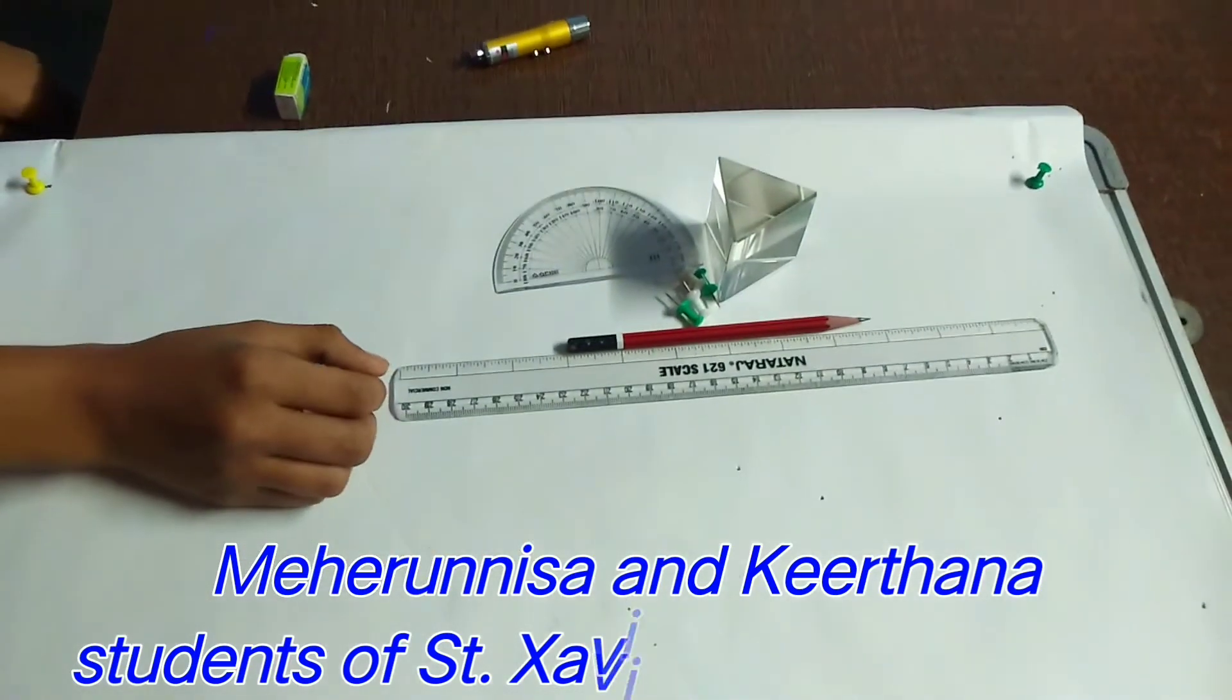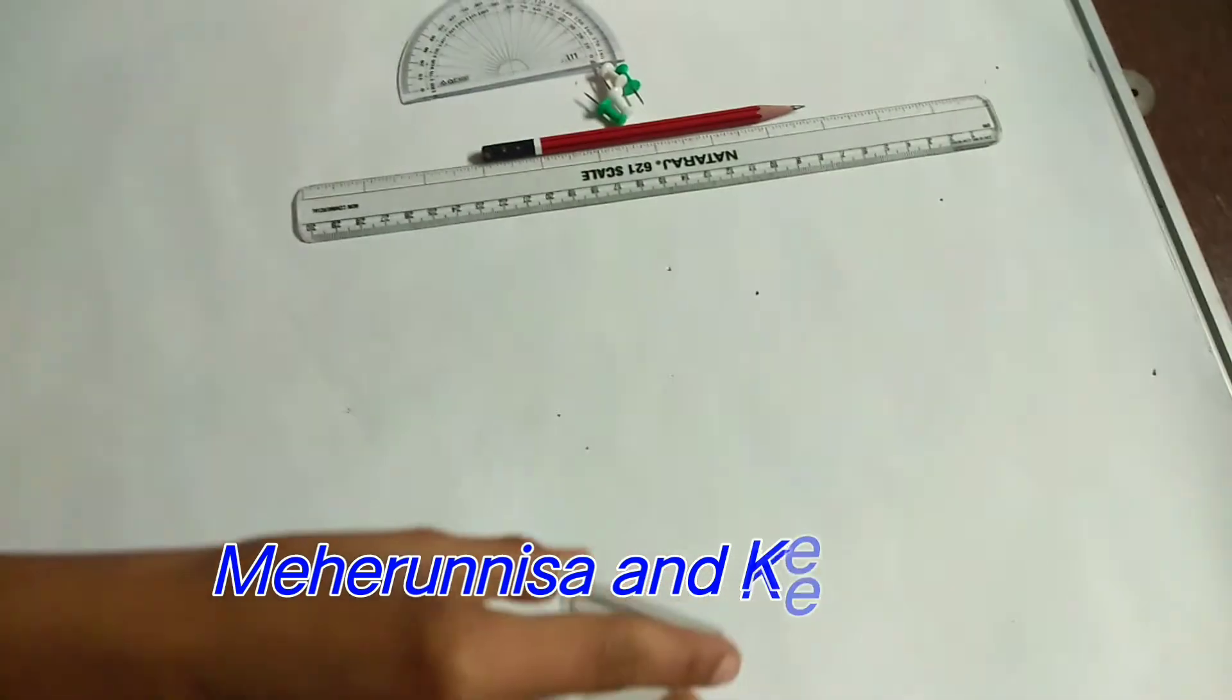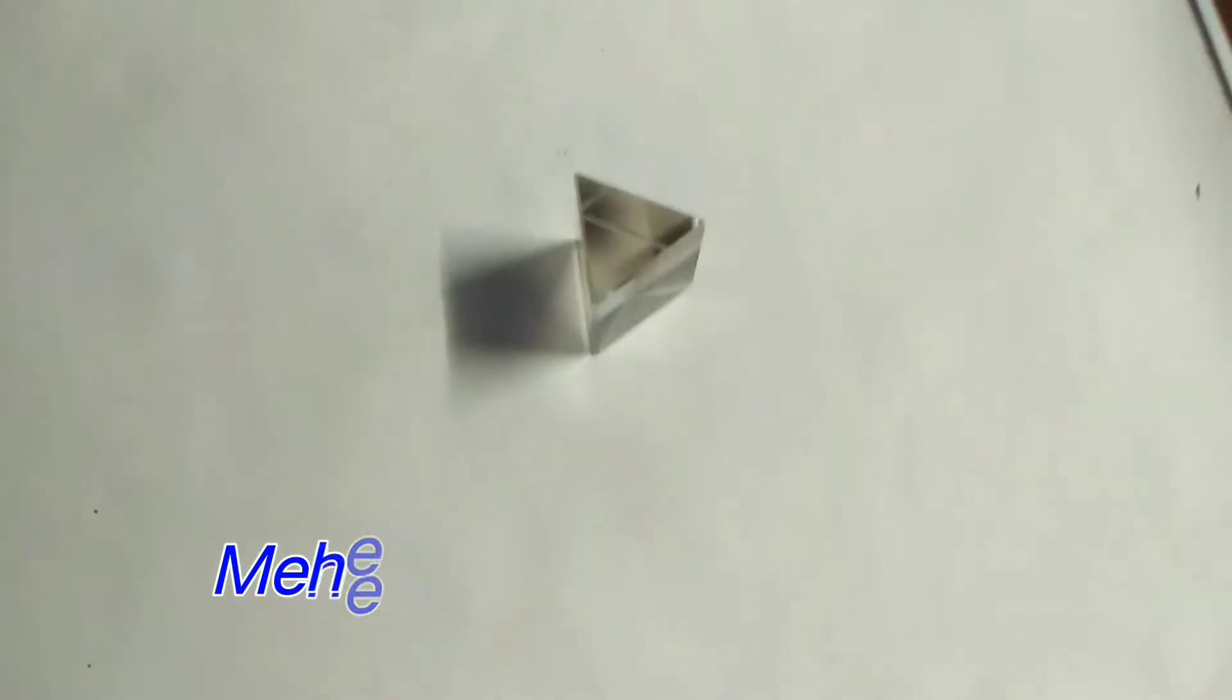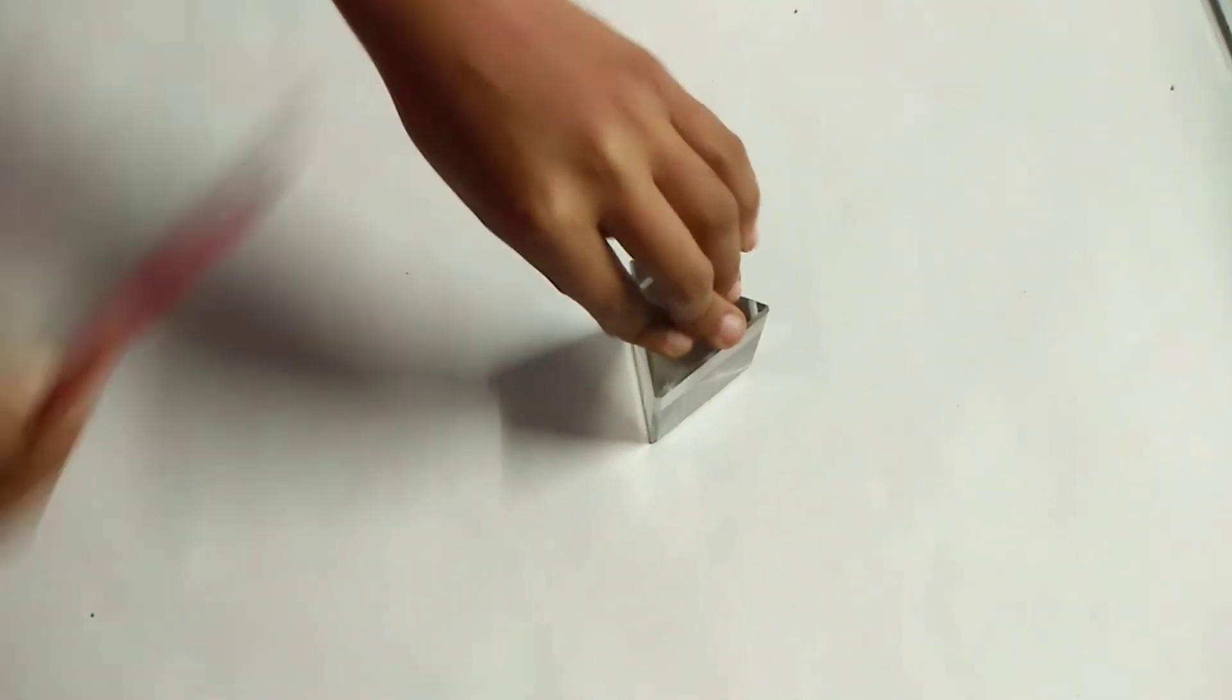The procedure we are going to follow is, take a prism, place it on the white chart in such a way that its triangular base is on the white chart. Draw the outline of prism using a pencil.